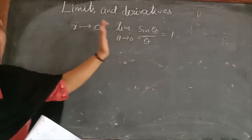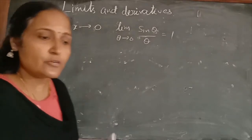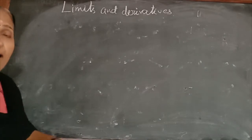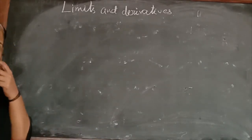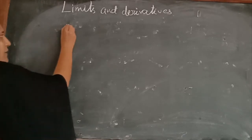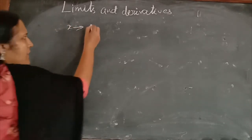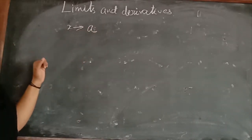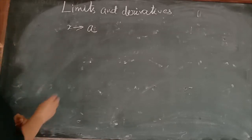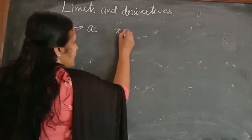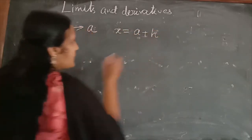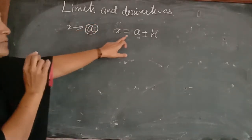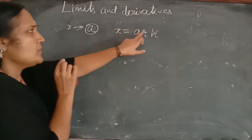Now what will happen when our angle does not tend to 0? Some questions will be there in which our angle does not tend to 0. So just write down the rule for that. Suppose when x tends to a, we will substitute x = a + h. So whatever angle is there, we will write that angle as x = a + h.